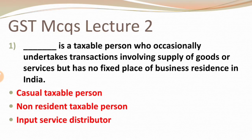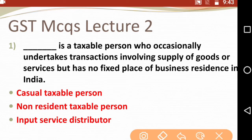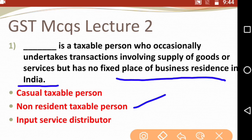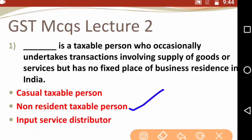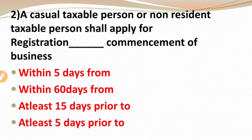Question one: Dash is a taxable person who occasionally undertakes transactions involving supply of goods or services but has no fixed place of business or residence in India. The options are: casual taxable person, non-resident taxable person, or input service distributor. The answer is non-resident taxable person, because there is no specific business residence in India.